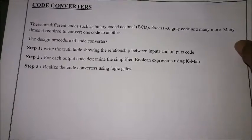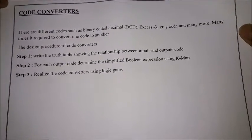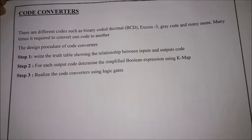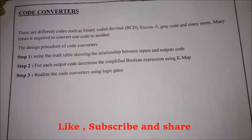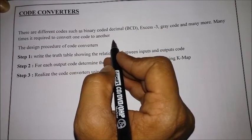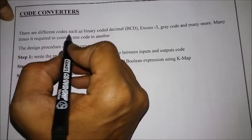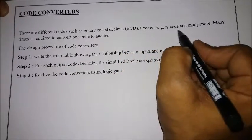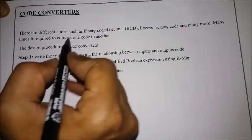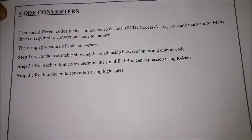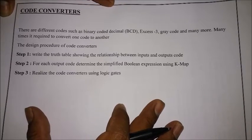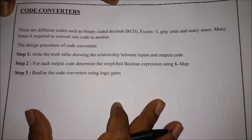In the previous lecture we covered half subtractor and full subtractor. In this lecture we are going to see code converters. A code converter is a circuit that converts one code to another code — how to use a circuit and how to design the circuit. There are different types of code converters like Binary Coded Decimal (BCD), XS3, Gray code, and many more. In digital electronics, whenever we want to convert a code from one to another, these kinds of code converters are used.